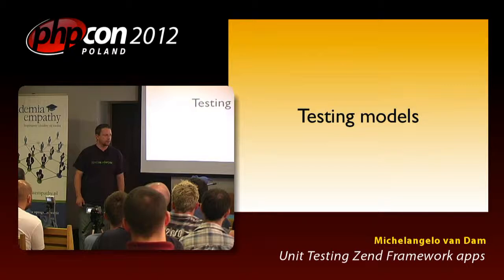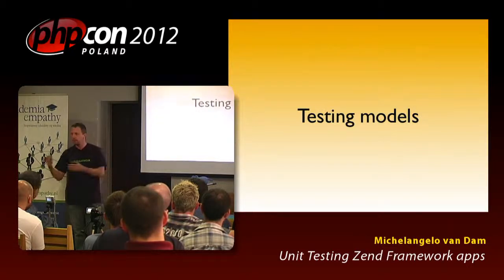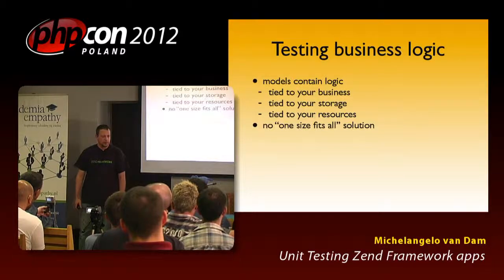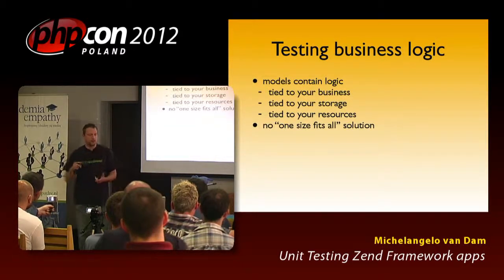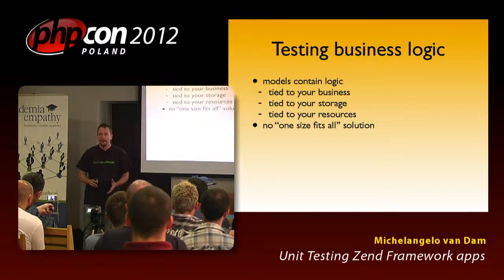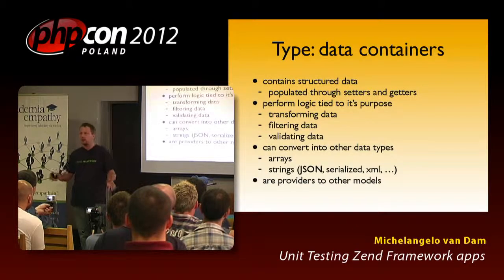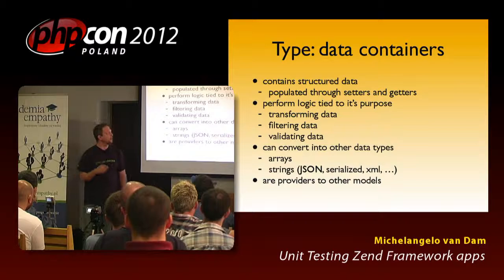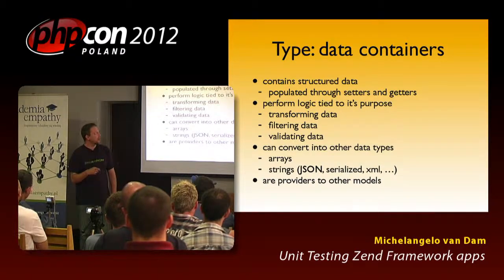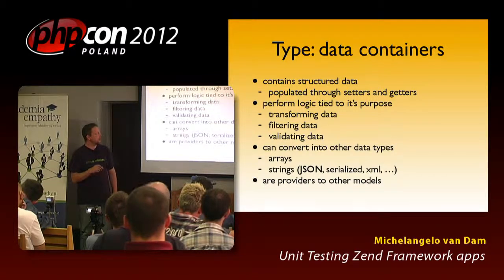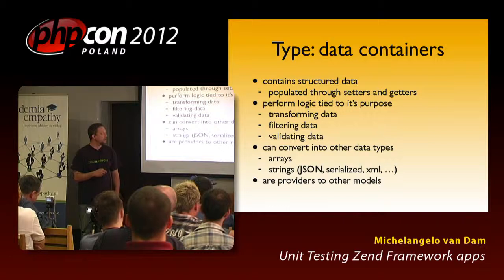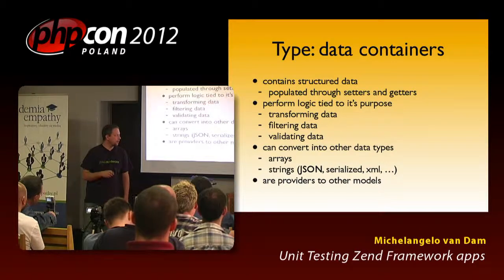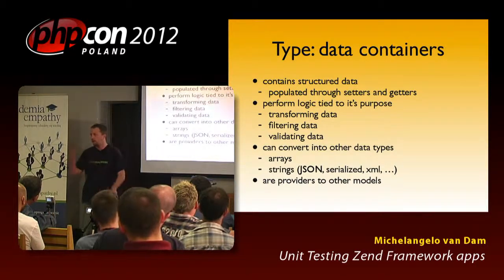Let me give you another example — testing models. This is more framework-agnostic, so you all feel more at home. We're testing business logic — it's containing logic tied to your business, your storage, your resources. There is no one-size-fits-all approach. I'm picking one type: a data container. It contains structured data. You populate it through setters and getters. You have some logic tied in it for transforming data, filtering data, validating data, converting into other data types — array, strings, JSON — and it acts as a provider to other models, decorators, and so on.